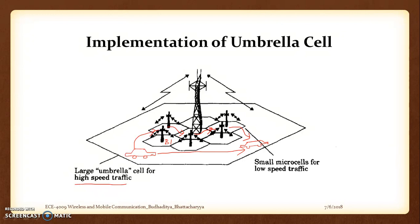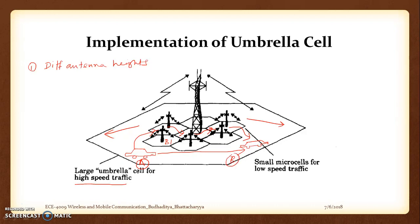The alternative solution for large umbrella cells covering high-speed traffic is to mount a very tall tower using different antenna heights. Even if the two antennas are in the same building, they can have different power levels. The larger, more powerful base station has a greater coverage region, so even if the car moves from position A to B, it remains under the coverage of the bigger base station and does not require a handoff. Pedestrian or low-speed traffic is handled by the small cells.